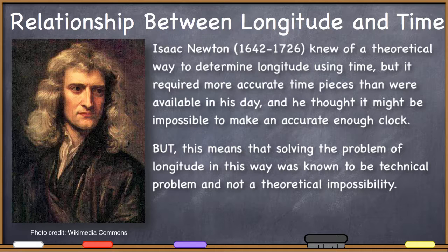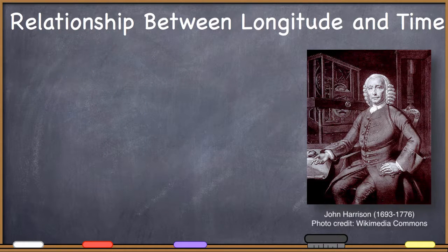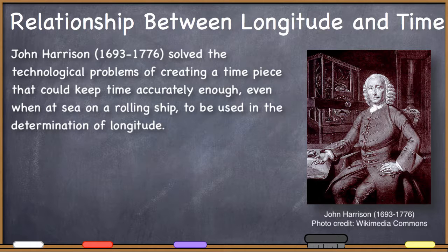When the British Admiralty established this prize to determine longitude for the use of the British Navy, they expected it to be won by an astronomer — someone who could determine a much faster and easier way to determine longitude, other than making extremely complex calculations and producing years' worth of almanacs. Little did they know that the prize would actually be won by a clockmaker, who solved the technological problems of creating a timepiece capable of keeping time accurately enough to implement this theoretical longitude-by-time method.